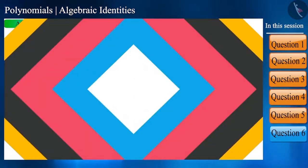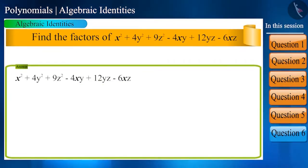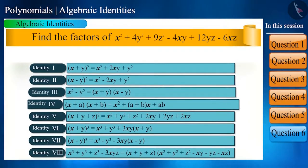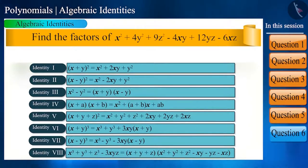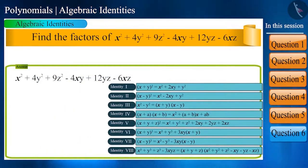Let's take the next question: find the factors of x² + 4y² + 9z² - 4xy + 12yz - 6xz. Once again we will look only at the variable and all the identities and find out with which identity it resembles.